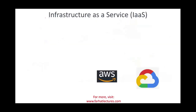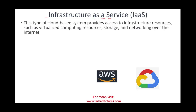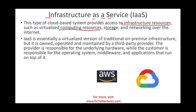Then we have IaaS — Infrastructure as a Service. This type of cloud computing provides access to infrastructure resources such as virtualized computing resources, storage, and networking over the internet. Simply put, you virtually have a version of the traditional on-premise infrastructure, but it's owned and operated by a third party. Well-known providers include Amazon and Google. The provider, such as Amazon or Google, is responsible for the underlying hardware — you use their hardware and they give you access to it. The customer is responsible for operating the system, middleware, and applications that run on top of it.